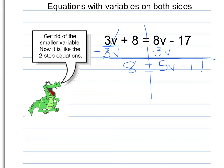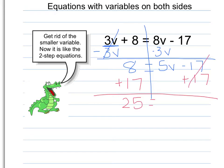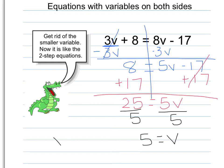See how I now have a two-step equation like we've been solving? I'm trying to get V by itself, so I'm going to add 17 to both sides. Because this was subtracting 17, I'm going to add 17 to get rid of it. On the left side, 18 plus 17 is 25. Since those cancel out, I'm left with 5V. My last step to get V all by itself: since V is being multiplied by 5, I'm going to divide by 5. V is equal to 5.